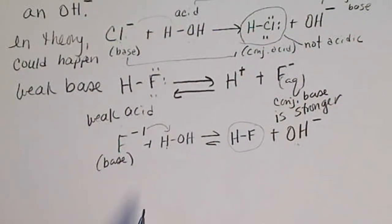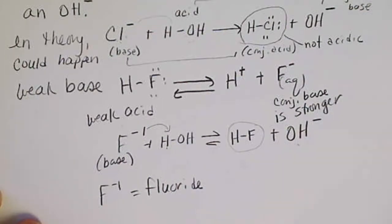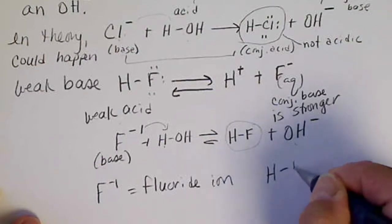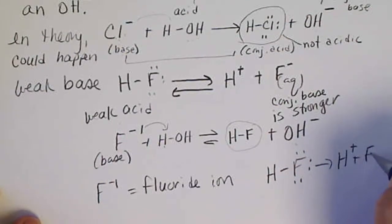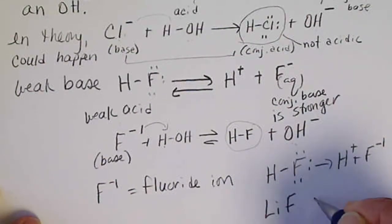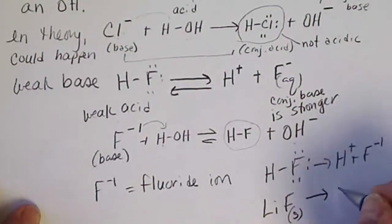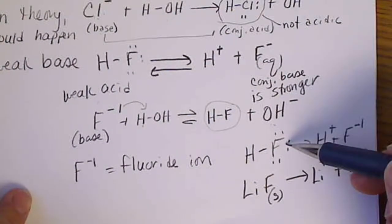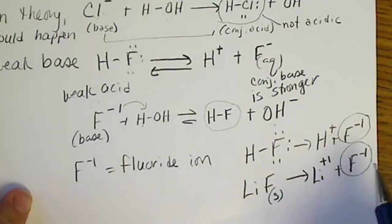The handout distinguishes the fluoride ion coming from hydrofluoric acid versus from a salt like lithium fluoride or sodium fluoride. The fluoride ion results from the dissociation of hydrofluoric acid, but we could also have the fluoride ion from a salt — for example, lithium fluoride, which is in toothpaste, dissolves into the lithium ion plus the fluoride ion. Whether the fluoride ion comes from the acid or the salt, it still behaves as a conjugate base.